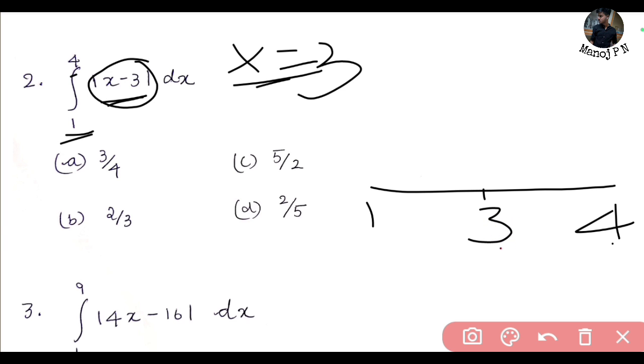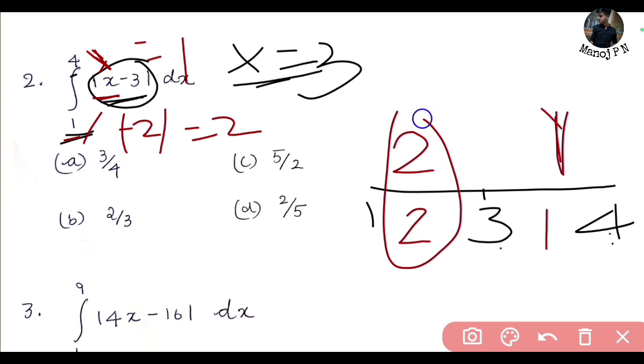Now question 2: integral 1 to 4 of mod x minus 3 dx. We have x equals 3. Lower limit 1 substitute: 1 minus 3 gives us minus 2 mod, which is 2. So lower limit on the left side.